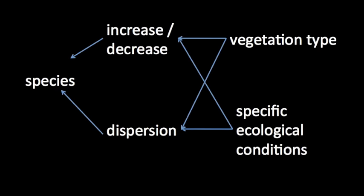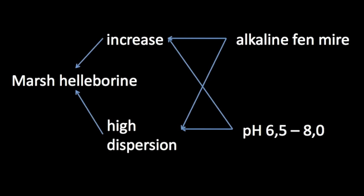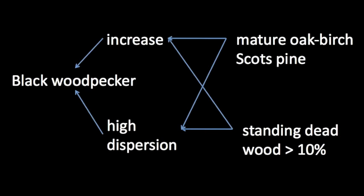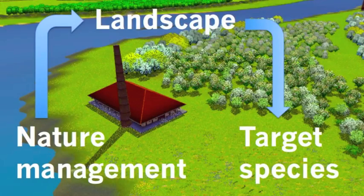Let's illustrate this with an example. The orchid species Marsh Helleborine can be programmed to flourish in alkaline fen meadows with a pH between 6.5 and 8. In these conditions, the population will grow and the species will have a high rate of dispersal. That same orchid finds less favorable conditions in flooded meadows or in alkaline fen meadows with a low pH. Another example: the black woodpecker can be programmed to favor mature oak-birch forest and Scots pine forest with a minimum of 10% of standing dead wood. This is, in a nutshell, how Ecosim works.